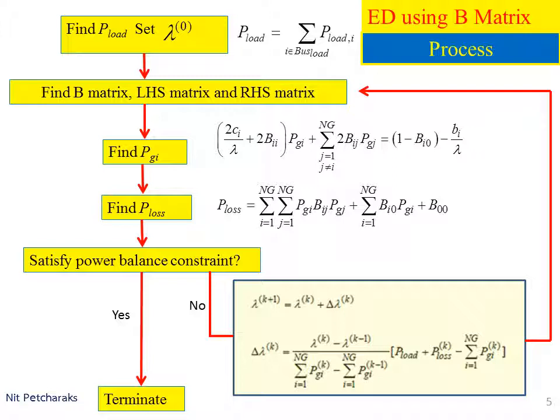Then find B matrix, LHS matrix, and RHS matrix. We will use them to find P_GI and P_loss by these equations. Then we check power balance constraint. If it is not satisfied, update lambda and go back to recalculate B matrix, LHS matrix, and RHS matrix. We will perform this process iteratively until power balance constraint is satisfied, then the process is terminated and solutions are obtained.